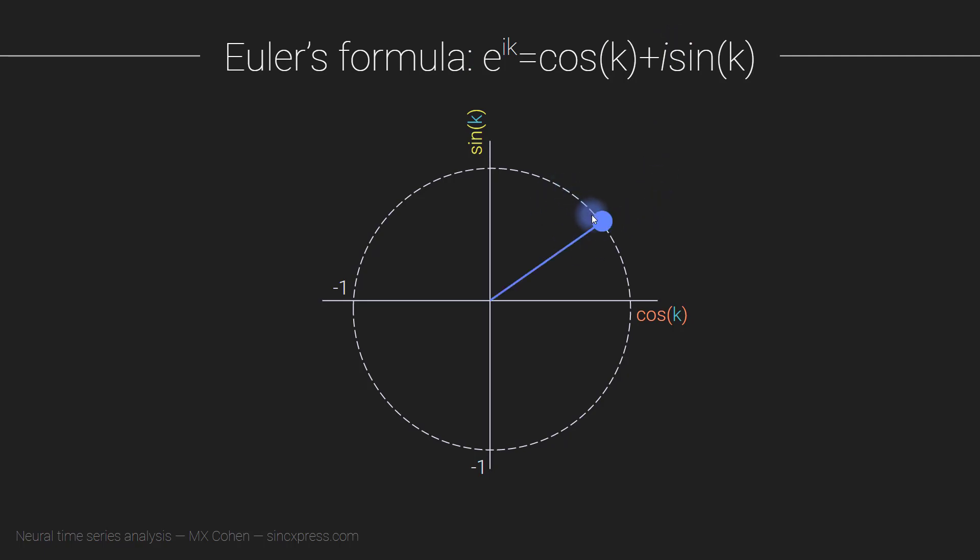So what this means is that if you pick a point on this unit circle, I'm calling this the unit circle because it is exactly one unit. It's the length of any point on this circle away from the origin is exactly one. So any point on this unit circle, which you can also think about as a vector that goes from the origin to that point on the unit circle, we can characterize this by the formula cosine k plus i sine k.